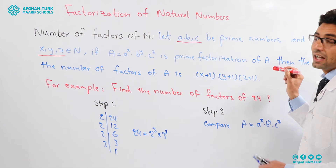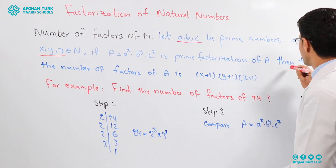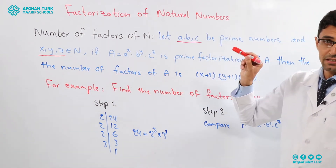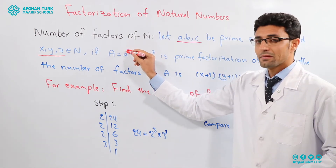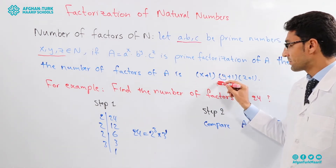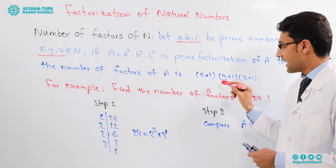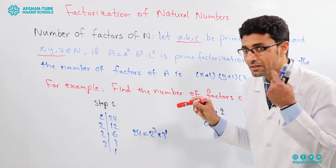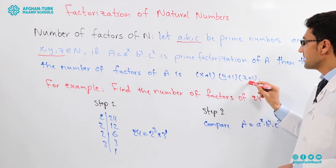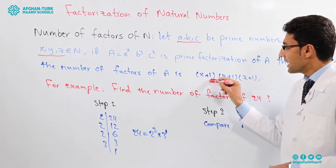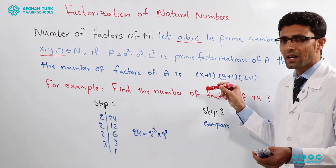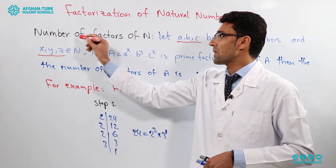Then how can we find the number of factors of a? The number of factors of a equals (x + 1) multiplied by (y + 1) multiplied by (z + 1). Remember: always add 1 to each exponent. If we multiply these numbers together, we find the number of factors.